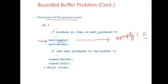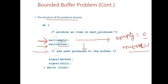If empty is not 0, the wait operation will not block the producer and control will go to the next statement. Mutex is the variable used to check the entry condition to access the buffer contents. If the consumer is not in the critical section, mutex will be 1. If the consumer is in the critical section, mutex will be 0. If mutex is 1, the wait operation on mutex will not block the producer, and the producer is permitted to enter the critical section and produce an element.